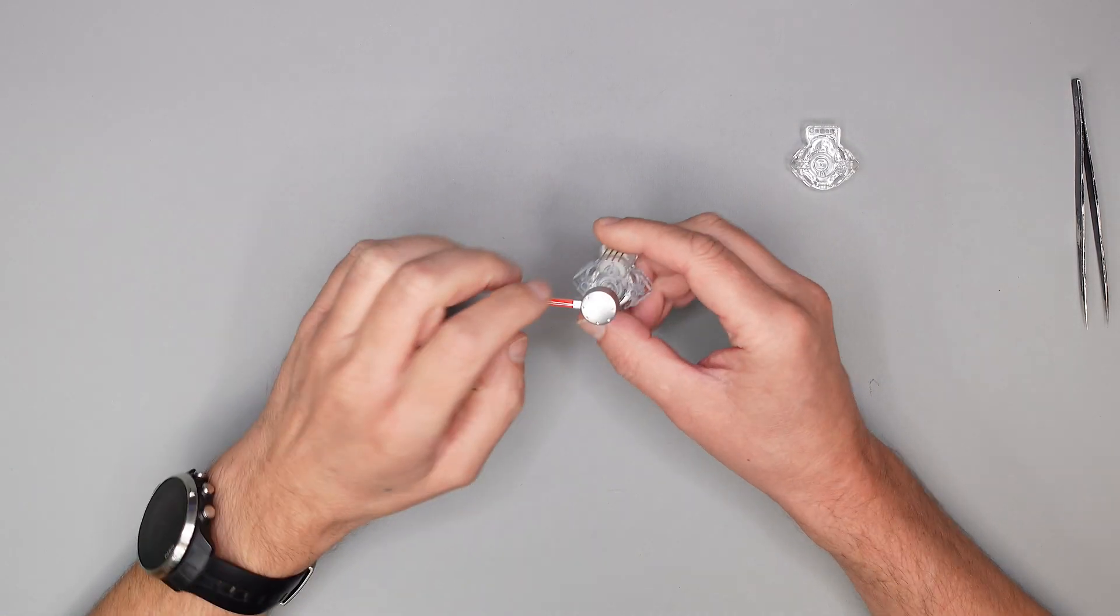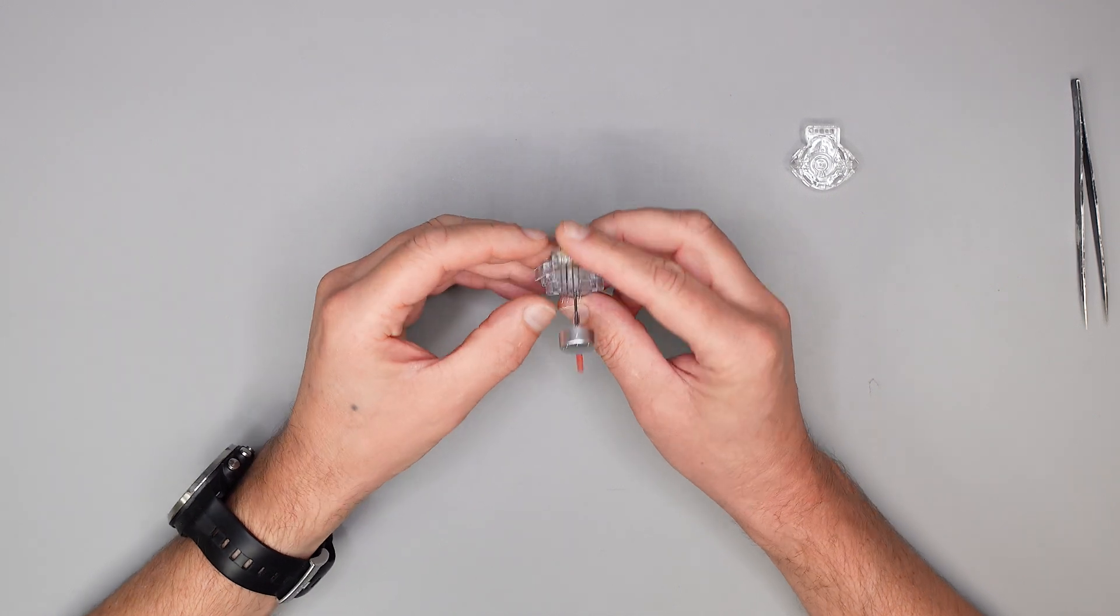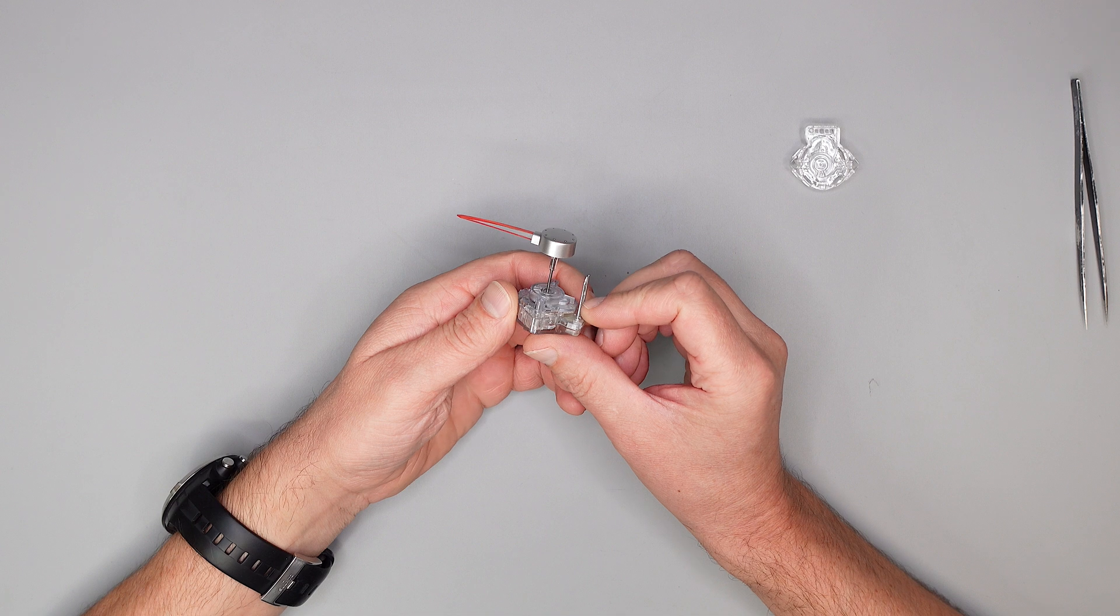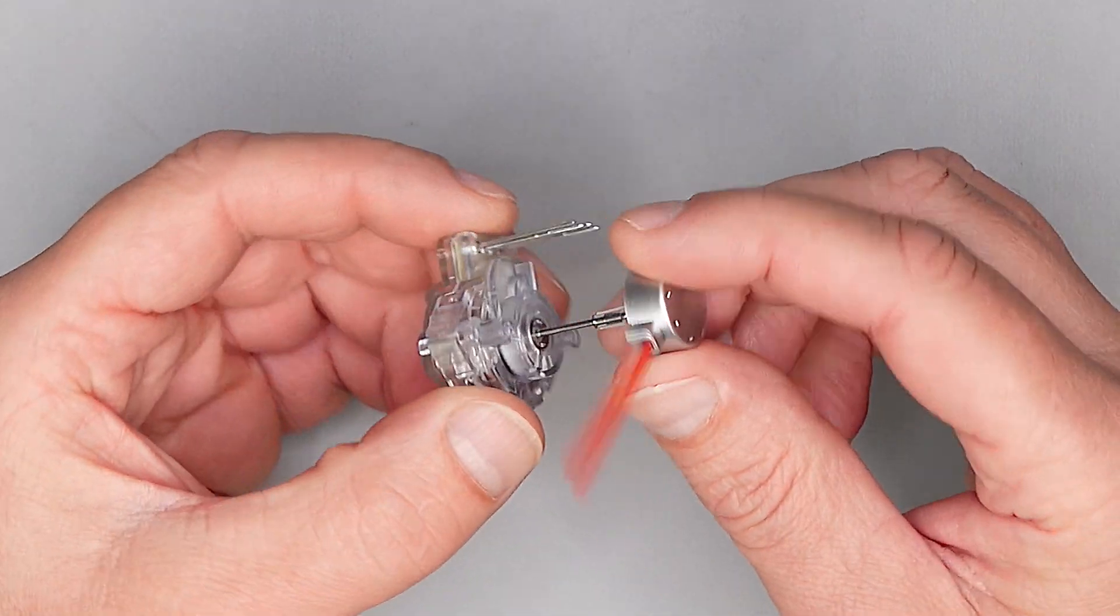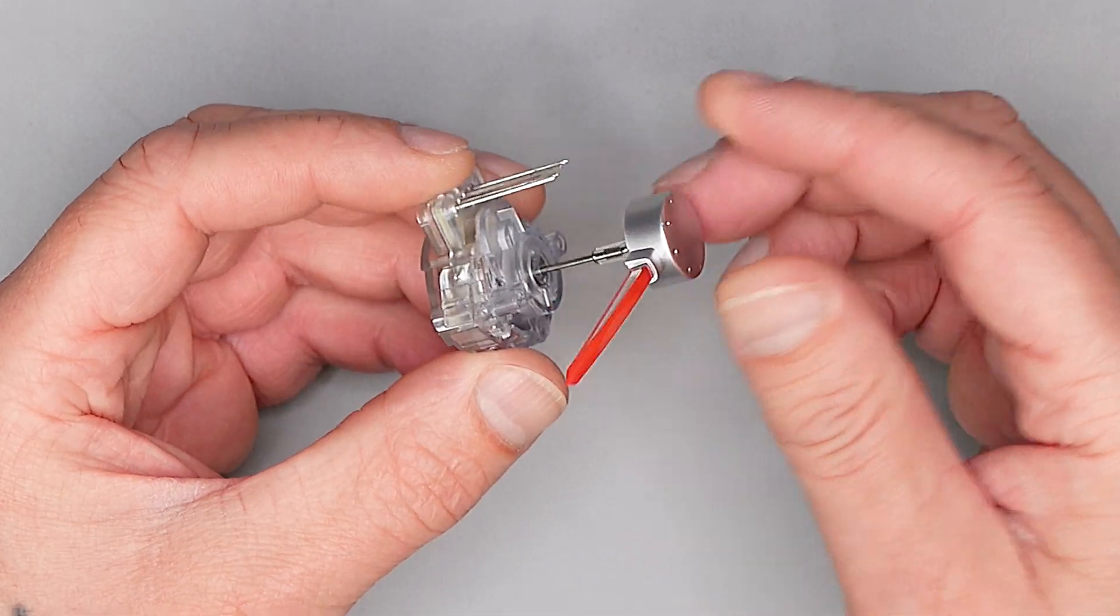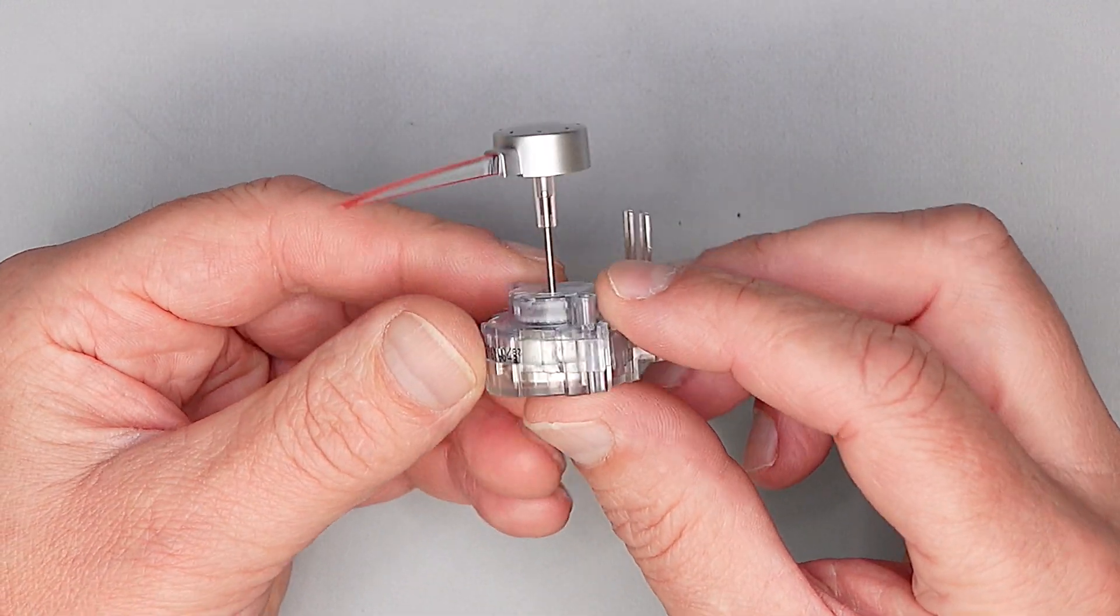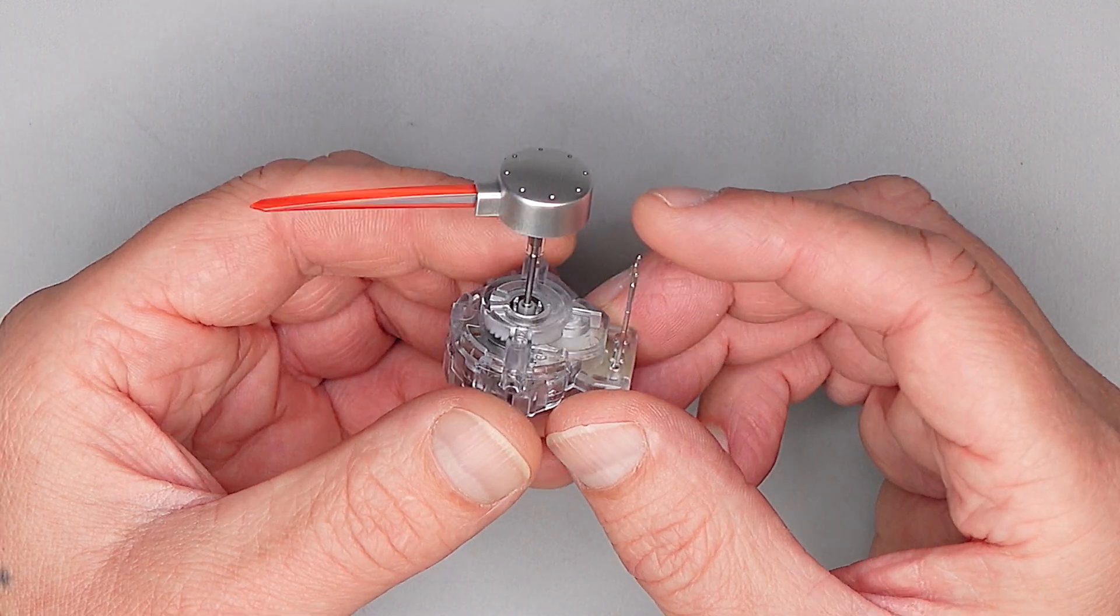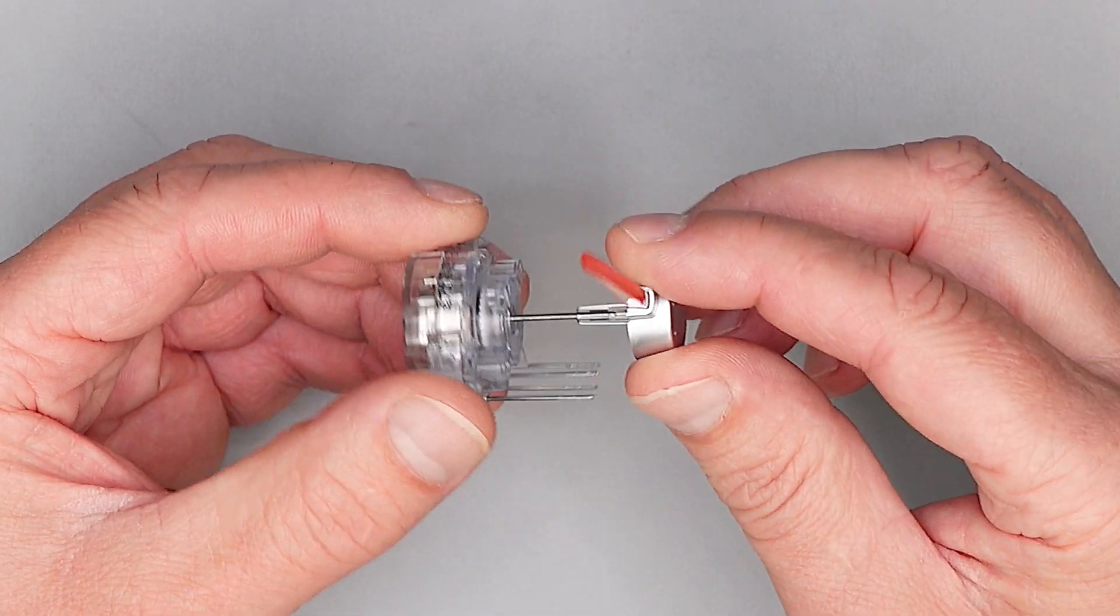Moin moin zusammen, hier ist wieder Dirk von PixelFehler Hamburg. Heute zeige ich euch mal eine Reparatur von einem Stellmotor. Der Stellmotor, Zeigermotor, Schrittmotor, wie auch immer man ihn nennen will, ist häufig verbaut in Magneti Marelli Tachos oder Jaeger Tachos. Der sitzt ganz oft in Audi Instrumenten: Audi TT, A3, A4, A6, im Peugeot Partner, 206, 806.